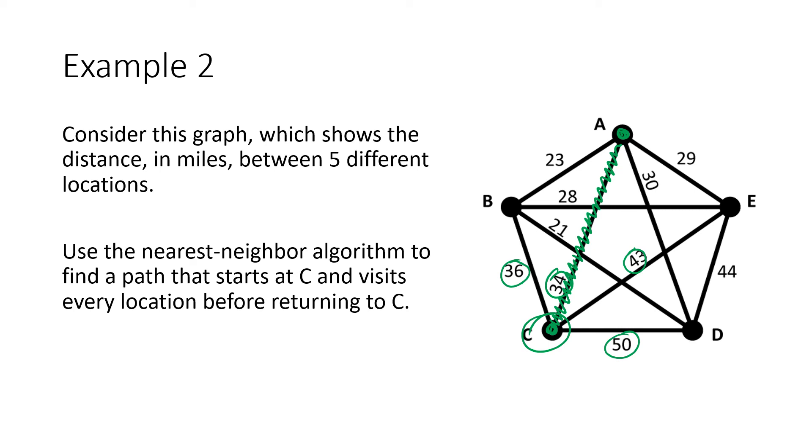So we look at the distances from A to the other locations. Again, we don't want to visit any place that we've already been until we're ready to return to the start. So now we're looking at from A to B is 23, from A to D is 30, and from A to E is 29. The lowest of those numbers is 23, so we go from A to B. Now we're at B.